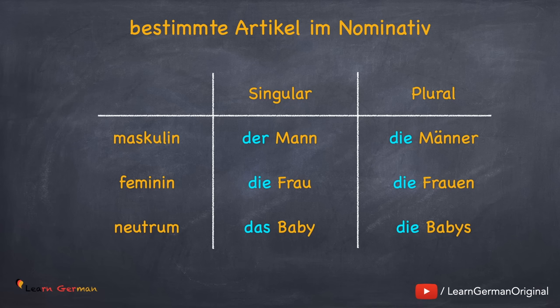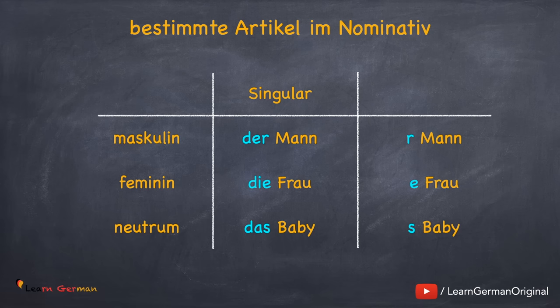That means: der Mann — die Männer, die Frau — die Frauen, das Baby — die Babys. As you can see, the article for plural is always die. A simple way to learn these articles is by writing er for der, a for die, and s for das.